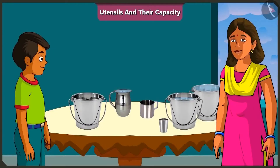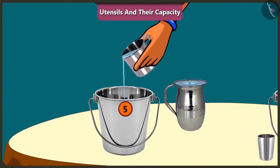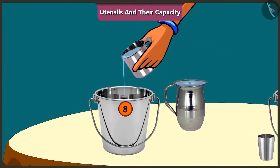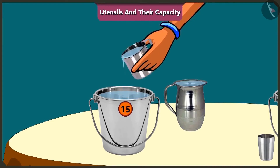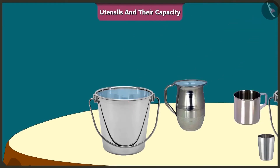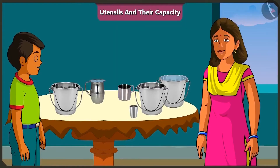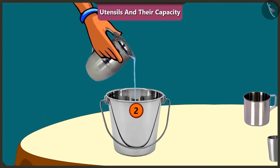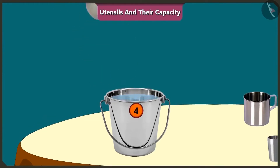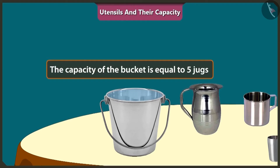Come on, let's fill the bucket using a mug. 1, 2, 3, 4, 5, 6, 7, 8, 9, 10, 11, 12, 13, 14, 15 mugs of water filled up the whole bucket completely. The capacity of this bucket is equal to 15 mugs of water. Let's try filling this bucket with this jug. 1, 2, 3, 4, 5. The whole bucket got filled with just 5 jugs of water. This means the capacity of this bucket is equal to 5 jugs of water.